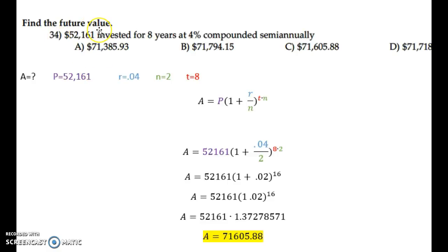For number 34, we're trying to find the future value of our investment. Here's the information about our investment, and here is the formula for compound interest. Compound interest is discussed in chapter 4.2, page 426.